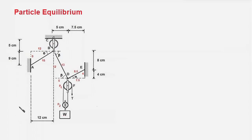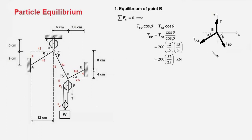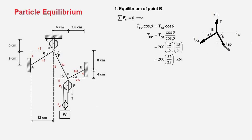We will first consider equilibrium of point B of the cable. Here is the free body diagram of point B. The tension force acting along cable section AB is T_AB, and similarly the tension along cable section BD is T_BD. The cable is also being pulled up by the pulley, so we show an arbitrary force F acting along the y-axis in the vertical direction. We are not interested in the magnitude of F; we are more interested in finding T_BD.